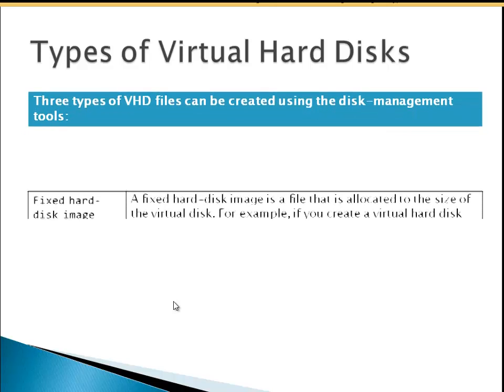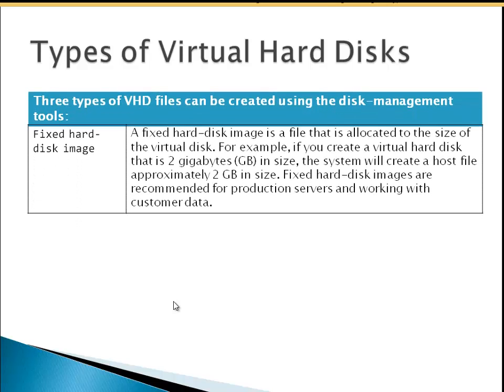Types of virtual hard disks: we have a fixed hard disk image. A fixed hard disk image is a file that is allocated to the size of the virtual disk. For example, if you create a virtual hard disk that is 2GB, the system will create a host file approximately 2GB in size. Fixed hard disk images are recommended for production servers and working with customer data because they are faster. So if we have a 20GB hard disk and we create a fixed 10GB hard disk, automatically 10GB will be taken from our physical hard disk.